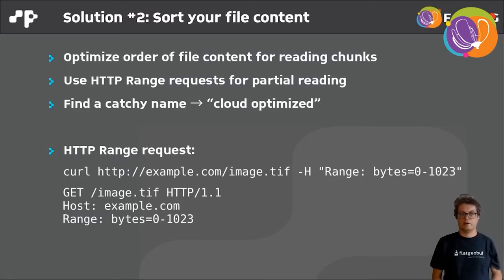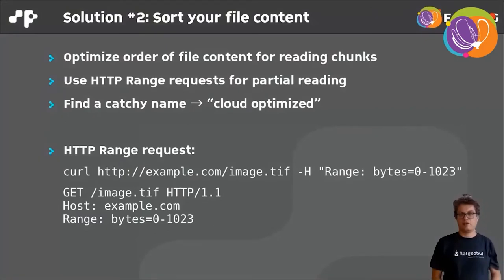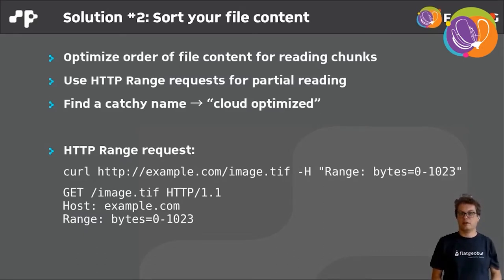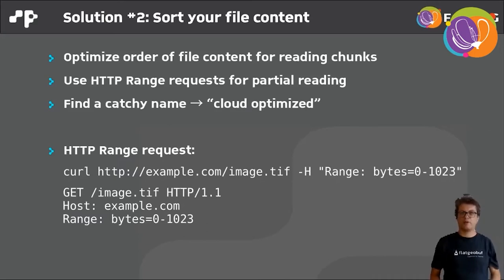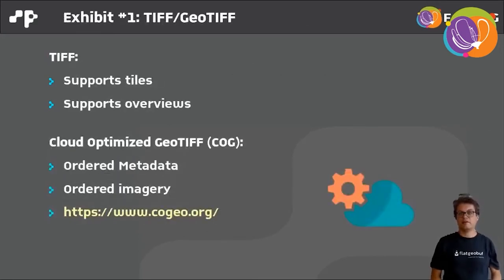Looking at HTTP range requests — first as a curl command. There's only one additional header you have to add, which is the range header. In this example, I'm loading the first 2024 bytes of a file. There are other types of this range header, but it's essentially this. And this is applied first for TIFF files.